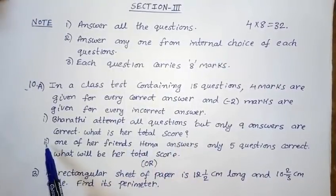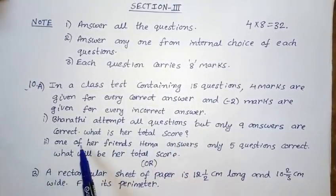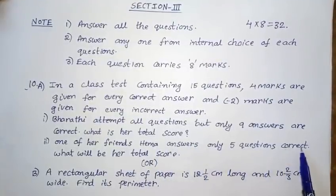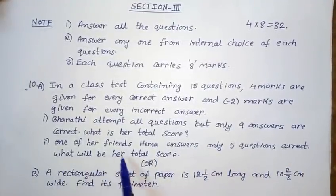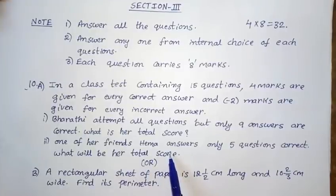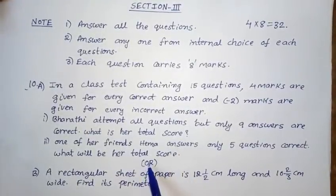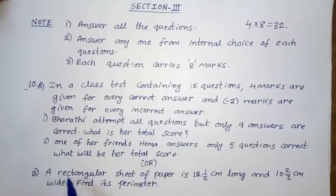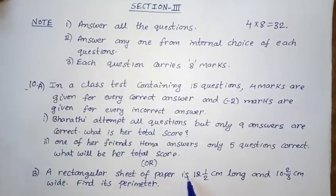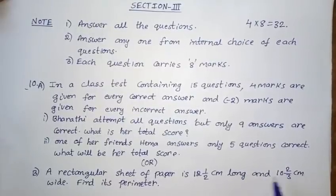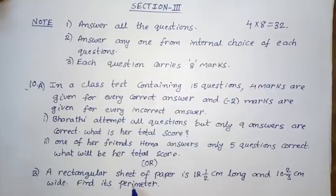Tenth question Part B (internal choice): One of her friends, Hema, answers only 5 questions correctly. What will be her total score? Internal choice: Tenth question Part B — A rectangular sheet of paper is 12 and 1/2 cm long and 10 and 2/3 cm wide. Find its perimeter.